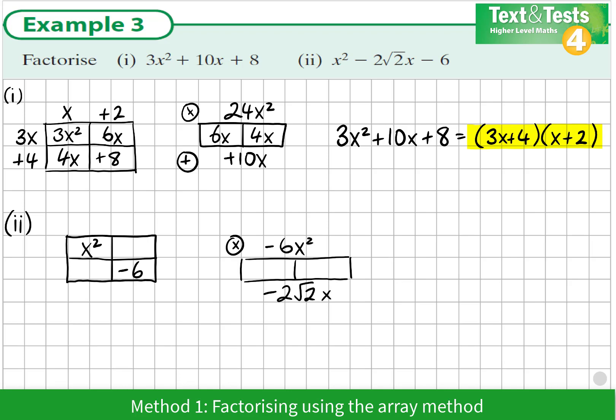So we're thinking of factors of -6x² that add up to -2√2x. The factors that work here are -3√2x multiplied by √2x. We would see that would multiply out: √2 times √2 is 2, and 2 times 3 is 6. And we have the negative sign there.